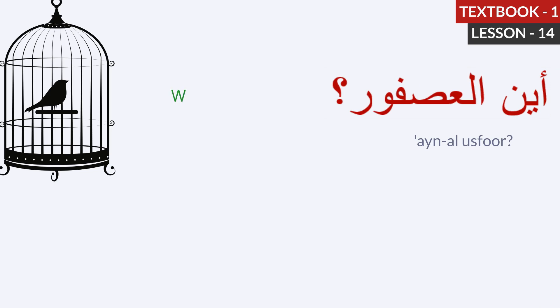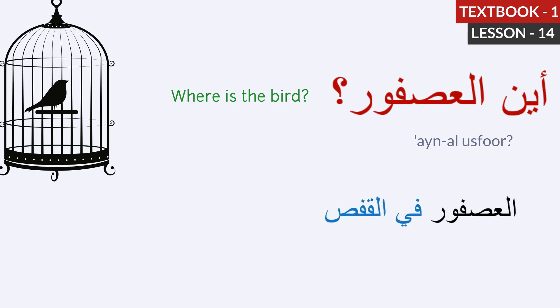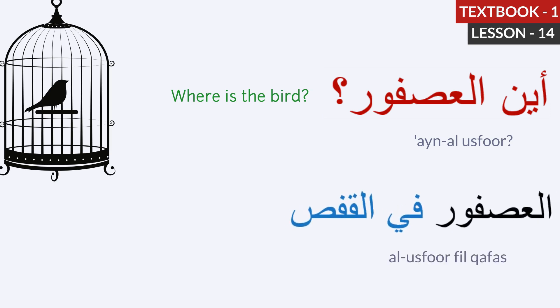Aina al-usfur. Where is the bird? Here, Aina means where. Al-usfur means the bird. Aina al-usfur — where is the bird? The answer: Fil-kafas. The bird is in the cage. Fil-kafas means in the cage.